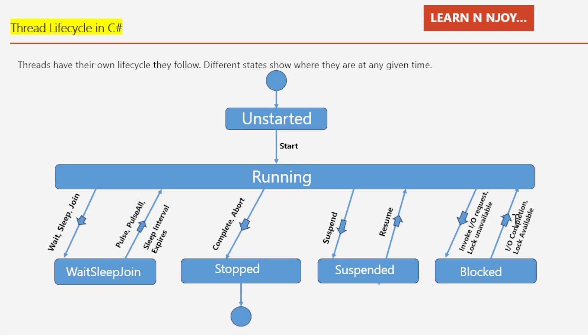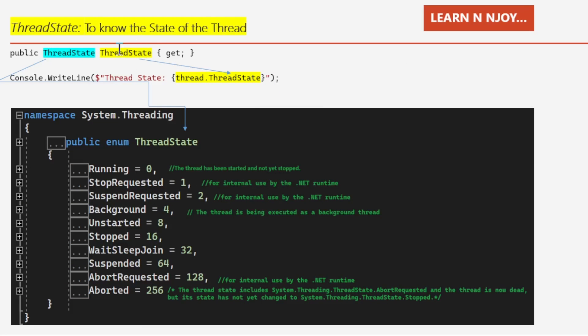Sometimes a thread may need to wait for a resource or an event, like waiting for a locked resource or an I/O operation to finish. In this case, it enters the blocked state where it patiently waits, and will continue when the resource becomes available or the I/O operation completes. So that's the simple story of the thread life cycle in C# — it starts unstarted, runs through various states like a race, and eventually ends its journey.